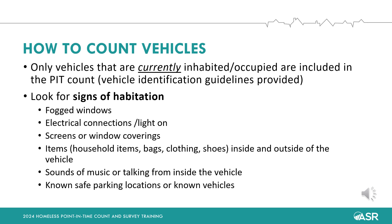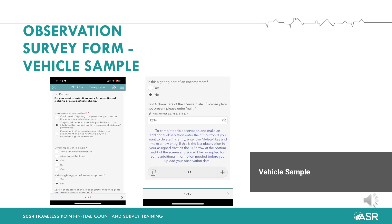Or that the vehicle is in a known safe parking location, which may be designated on your map. If you find a car, RV, or van that looks inhabited based on those signs but you cannot determine how many persons are residing in the vehicle, you start by selecting suspected under confirmed or suspected. Next, under dwelling or vehicle type, you would bubble in car, RV, or van depending on what type of vehicle it is. Under is this sighting part of an encampment, you would bubble in no. Additionally, we ask that you record the last four digits of the license plate of each vehicle you include in the count. Recording the last four digits helps us avoid count duplication, as vehicles move quickly and this ensures they are not counted twice. The field for listing the last four digits of the license plate number is located below the section entitled dwelling or vehicle type. After that, submit the entry by pressing the plus icon near the bottom right corner of the screen.